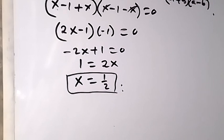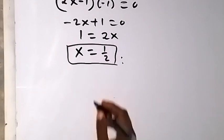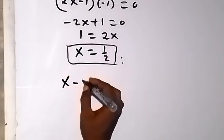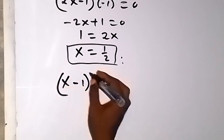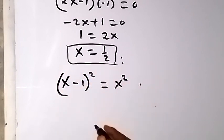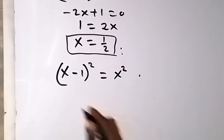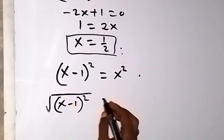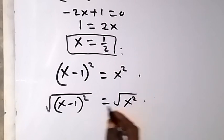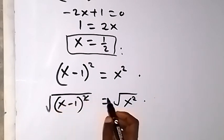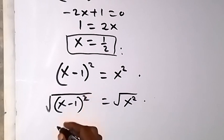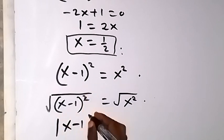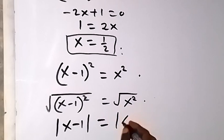Let's look at the third way of solving this very quickly. We are given x minus 1 squared equals to x squared. Then we can take the square root on both sides. Taking the square root on both sides, we have square root of x minus 1 squared equals to square root of x squared. Square root and square cancel, and this gives us absolute value of x minus 1 equals to absolute value of x.